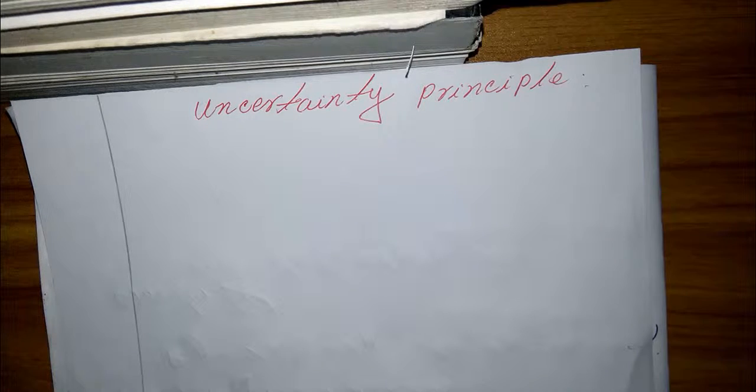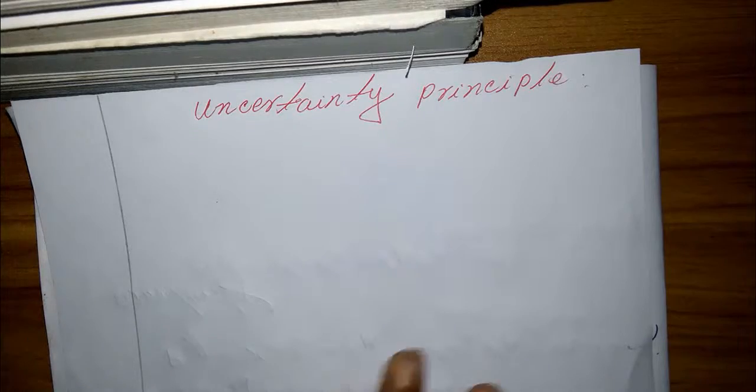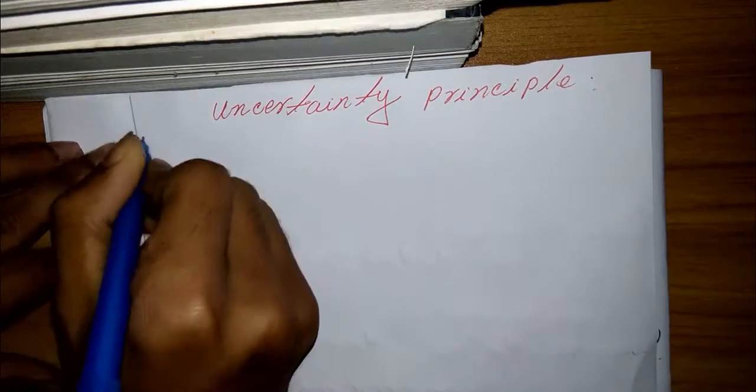Heisenberg in 1927. He said that it is impossible to know both the exact position and exact momentum of an object at the same time. So I write it: it is impossible